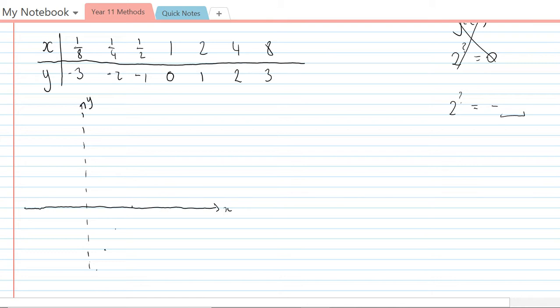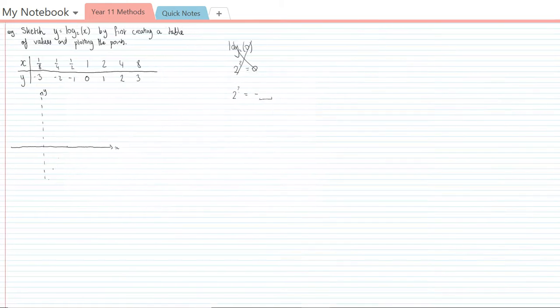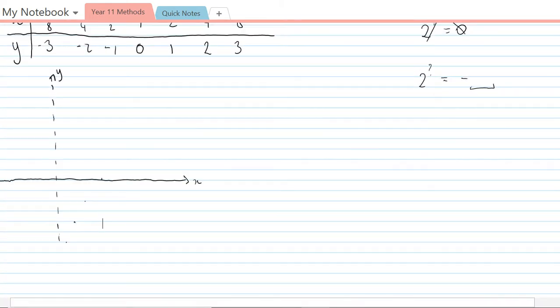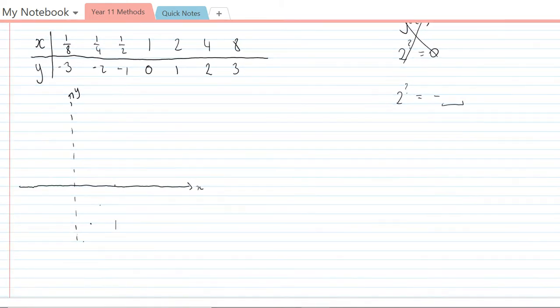When we had an x value of 1, the y value was 0. This isn't really to scale, but an x value of 2 gives a y value of 1. An x value of 4 gives a y value of 2.